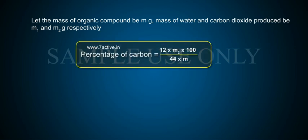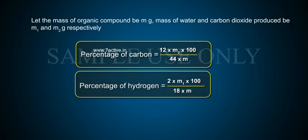Percentage of carbon equals 12 × M2 × 100 / (44 × M). Percentage of hydrogen equals 2 × M1 × 100 / (18 × M).